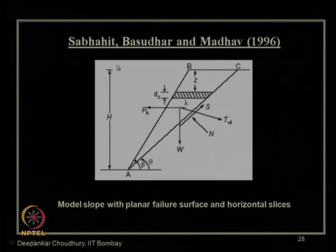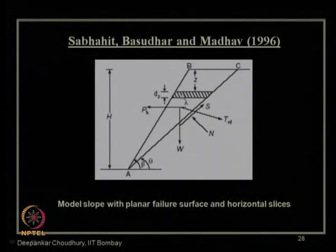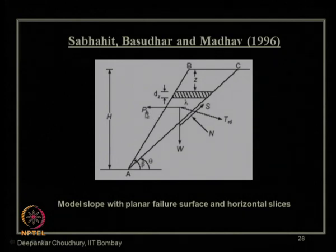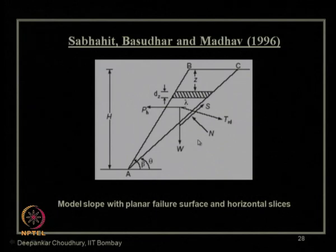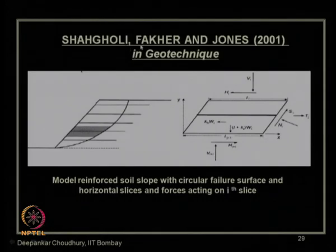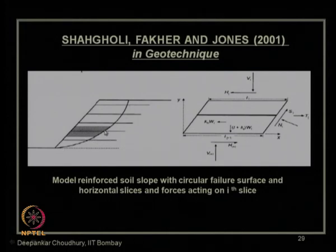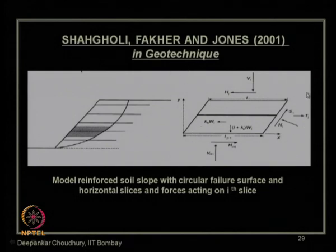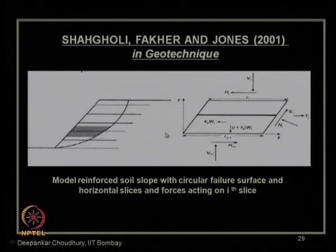Sabahid, Basudhar, and Madhav in 1996 proposed the horizontal slice method for slope stability analysis, with an additional horizontal force pH acting alongside static forces. Shagoli, Fakir, and Jones in 2001 also used the horizontal slice method for a reinforced soil slope, published in Géotechnique, IC London. This shows the basic force diagram on an infinitesimal soil mass containing one reinforcement, as the analysis by Shagoli et al. using the horizontal slice method.